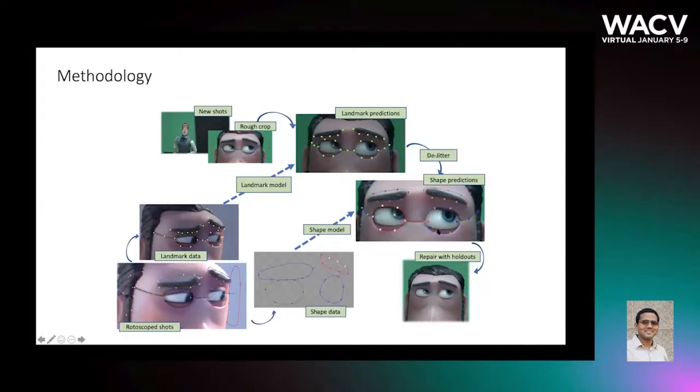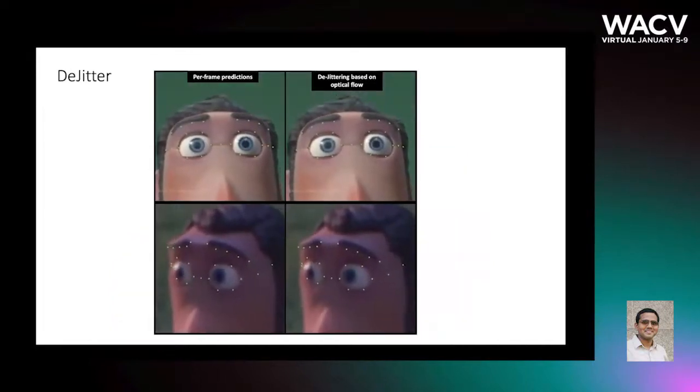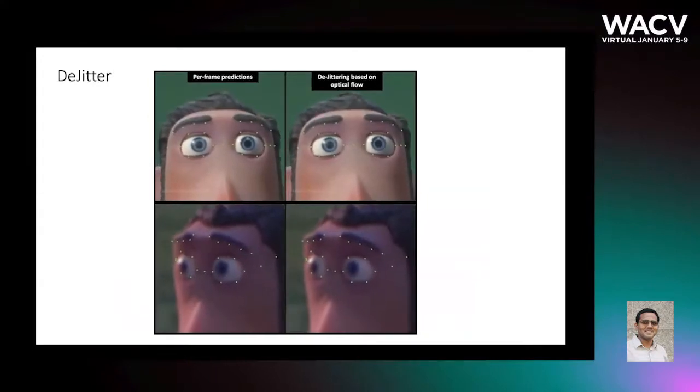Lastly, the shapes are predicted from fused landmark points separately for all the frames. Here are a couple of examples showing how de-jittering improves the coherence of predicted landmarks.